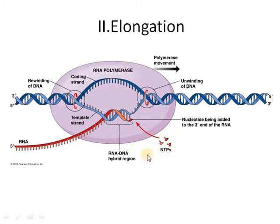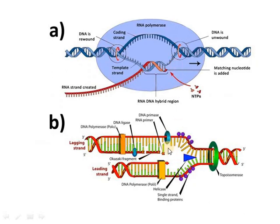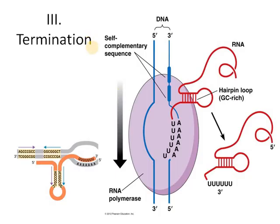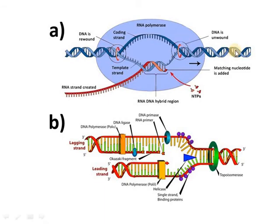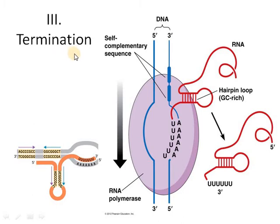Agar hum compare karein transcription aur replication ko — toh DNA polymerase aur RNA polymerase ki activity kuch milti julti hai. Dono mein yeh salahiyat hai ki 3' end ke upar nucleotides lagate hain, aur dono existing DNA ke template strand ke mutaabiq complementary strand banaate chale jaate hain. Lekin fark kya hai? DNA polymerase ko kaam karne ke liye chahiye primer, lekin RNA polymerase ko primer nahi chahiye. Jab elongation hoti chali jaati hai, kisi point tak — jahan pe end aa jaaye — toh termination. Third step is termination.